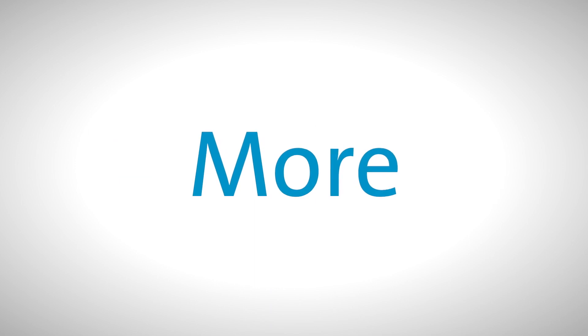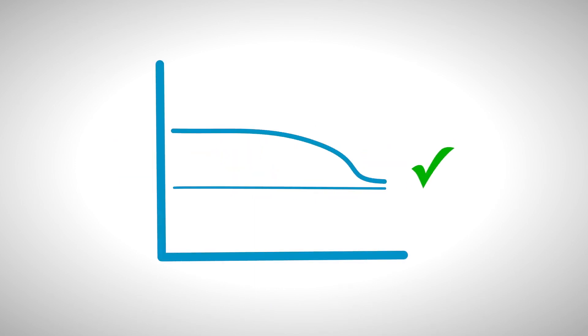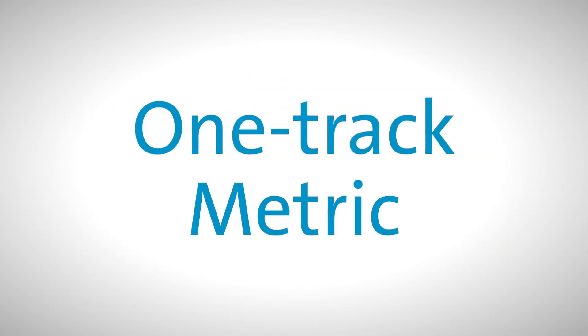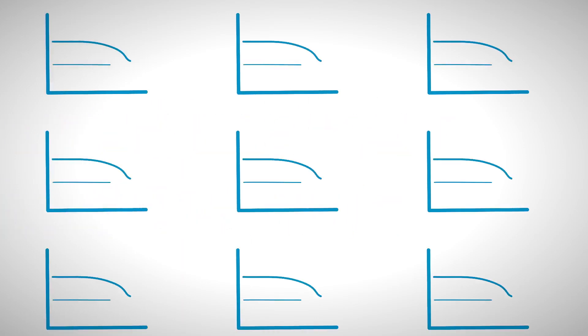And there's more. When you use only a single metric it's easy to conclude that everything is okay while in reality many signs are in the red. We call this pitfall a one track metric. To prevent this pitfall always use multiple metrics to measure your progress.